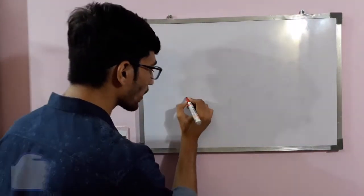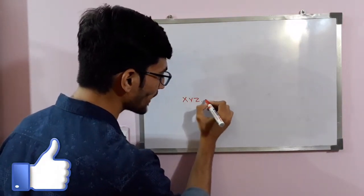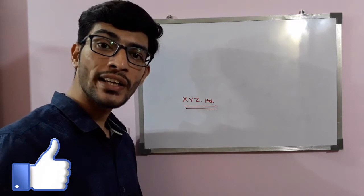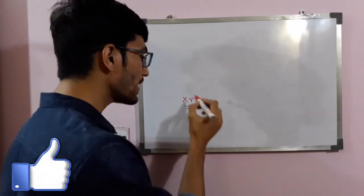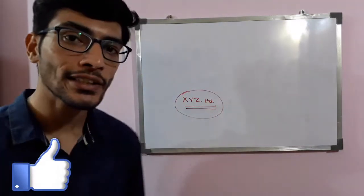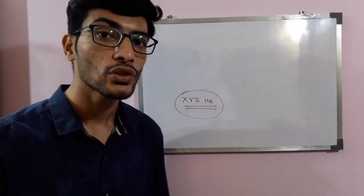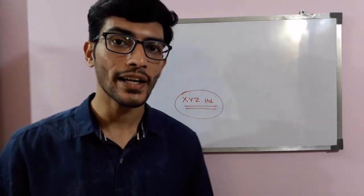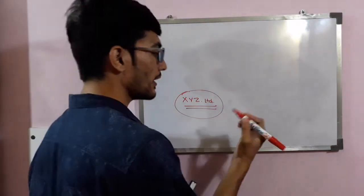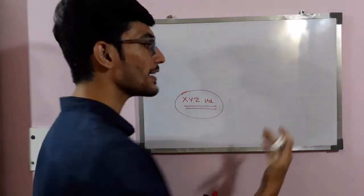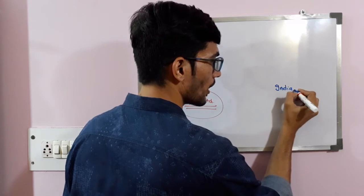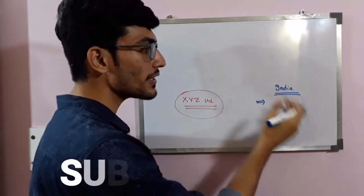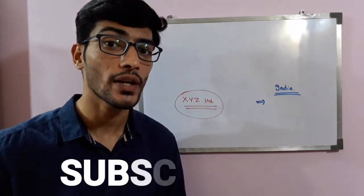Let's say there is a particular company in America called XYZ Limited. This company manufactures its product in America and sells its product in America — it belongs to America. But now this company wants to promote its business, so one way is it can invest in some other country. Let's say that country is India. XYZ Limited wants to invest in India, and it can do so by two ways: one is FDI and the second one is FII.